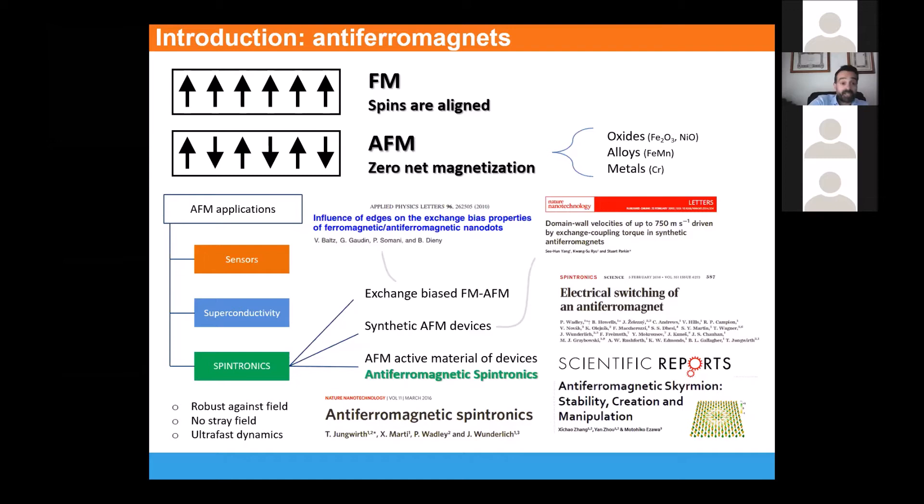And very recently, spintronics has focused on the possibility to consider antiferromagnetic materials as the key layers of our device. Actually, those materials hold very important properties for spintronic devices because they are robust against external field. They do not produce stray fields, and this aspect actually leads to different and more complicated experimental techniques to reveal the magnetization state. But above all, they show ultra-fast dynamics. Actually, we can say that in antiferromagnetic materials we can obtain those terahertz oscillations, as well as gigahertz oscillations are obtained in ferromagnets.